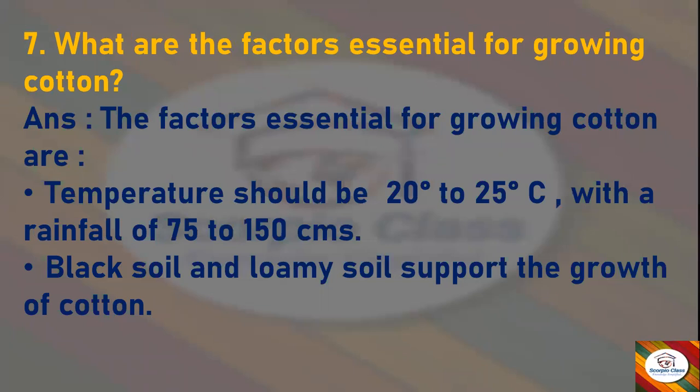Next question: What are the factors essential for growing cotton? Answer: The factors essential for growing cotton are — temperature: the temperature should be 20 to 25 degrees Celsius with a rainfall of 75 to 150 centimeters. Black soil and loamy soil support the growth of cotton. So soil type and temperature are the factors which are essential for growing cotton.